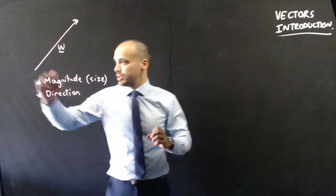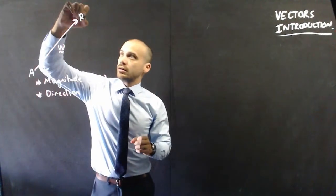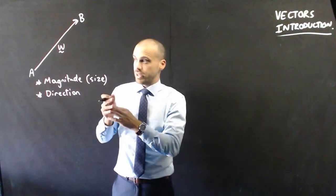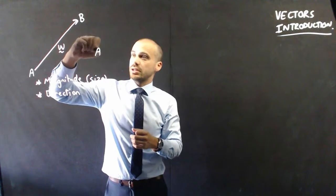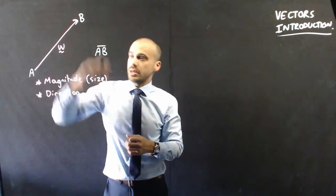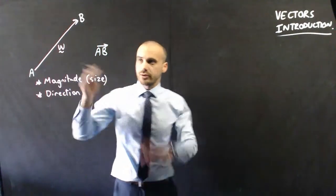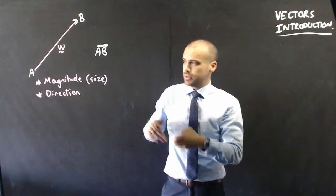Another little bit here: if I call that point A and point B, another way to talk about this vector would be to call it vector AB. So you might see that notation as well, just with a little arrow—AB, vector AB.